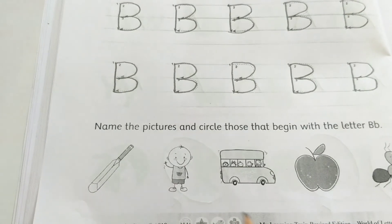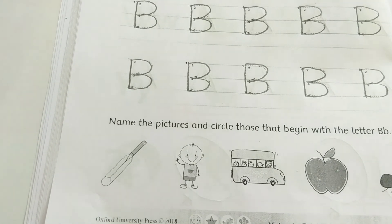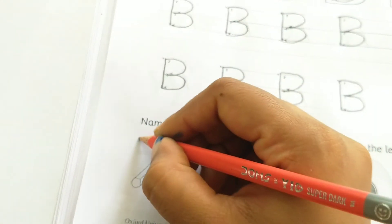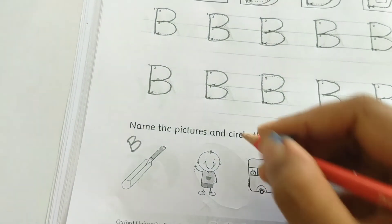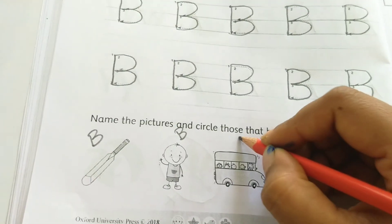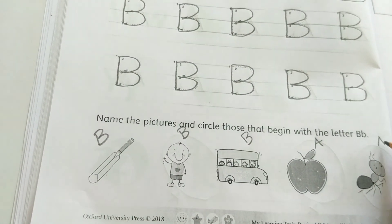Next, name the pictures and circle those that begin with the letter B. Here we can see this is B for bat, B for boy, B for bus, F for apple and F for ant.